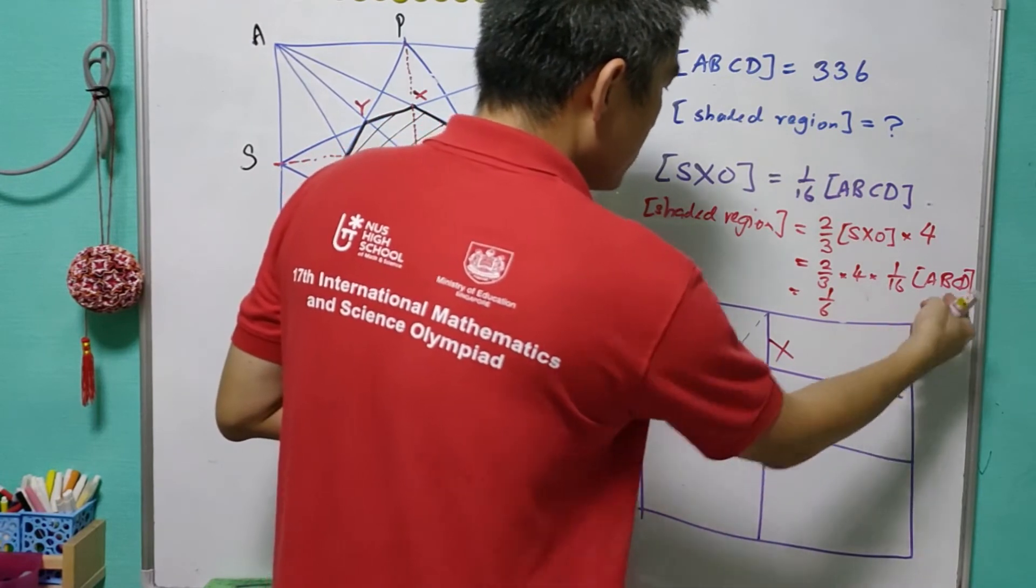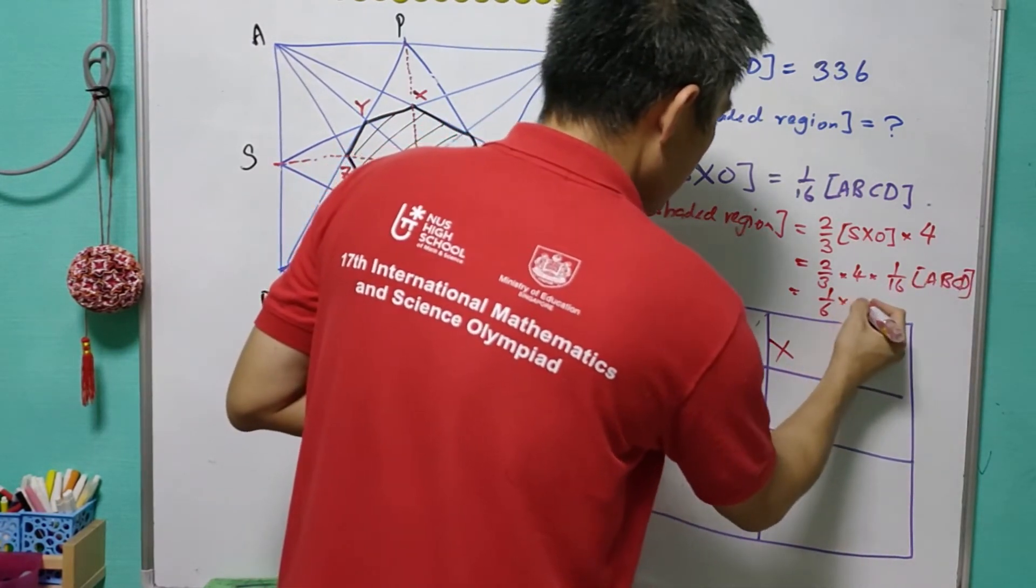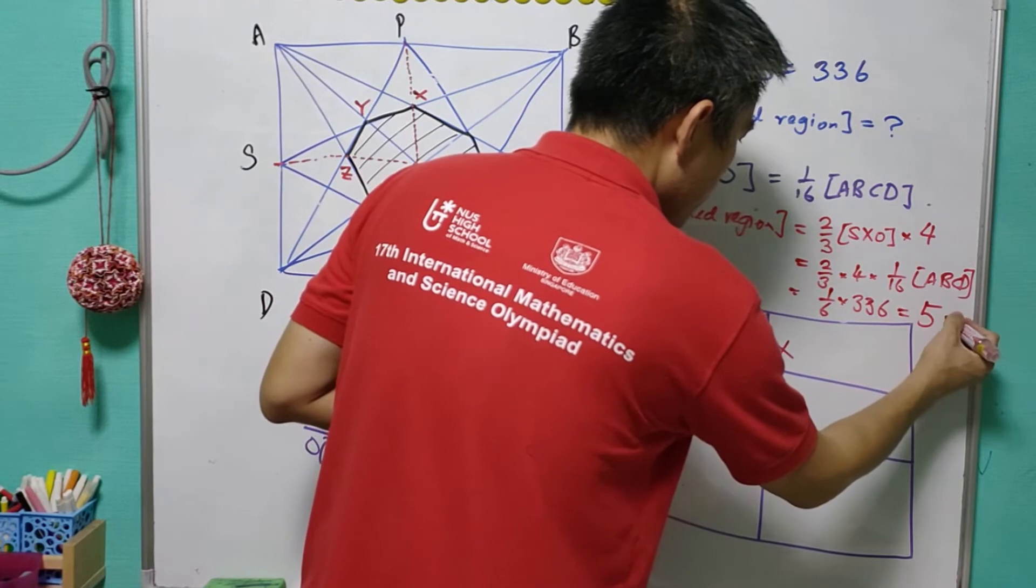And therefore, this equals to 1 over 6 of ABCD. That is 336. This is equal to 56.